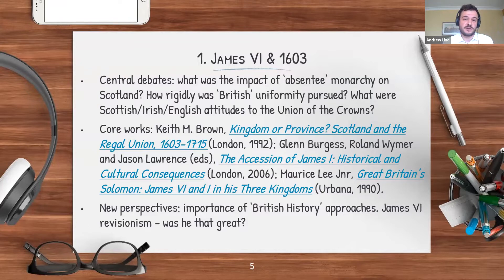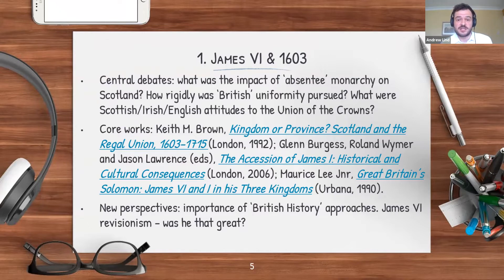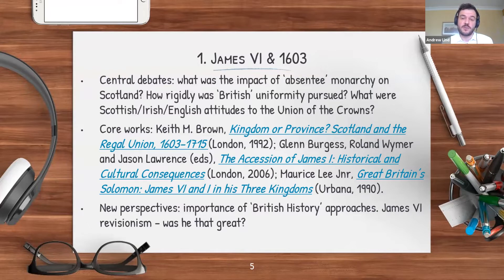Things like why in Scotland the Union of the Crowns was initially popular and then became less so, and why in England it received a mixed reception but gradually became more popular. The key works for this topic include Keith Brown's Kingdom or Province, which looks at this whole century from a Scottish perspective. The edited collection by Glenn Burgess, Ronald Weimer and Jason Lawrence, The Ascension of James I, is another useful collection. And Morris Lee's Great Britain Solomon really tackles the problem of post-1603 government in Stuart Britain from a Three Kingdoms perspective.